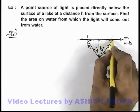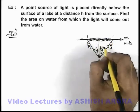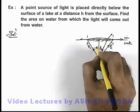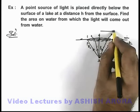So this would be a circular area or a circular patch on water surface from which the light rays will be coming out in air. So in this situation if the radius of this circular patch is r...